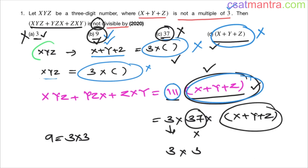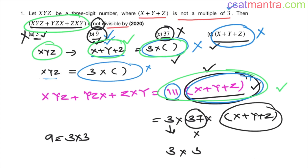Quick recap: a three-digit number xyz is given, sum of digits is not a multiple of 3. The sum xyz + yzx + zxy equals 111(x + y + z). Checking options: divisible by 3 — yes (111 = 3 × 37); divisible by 37 — yes; divisible by x + y + z — yes; divisible by 9 — no, because we have only one factor of 3. Answer is B.